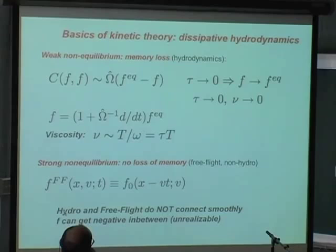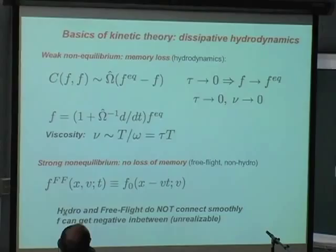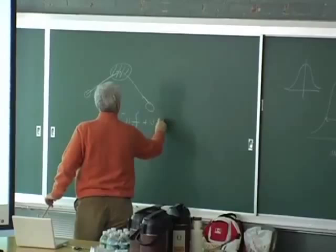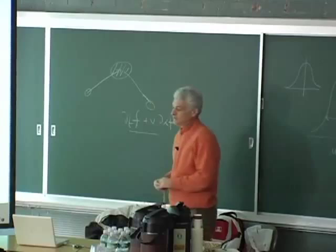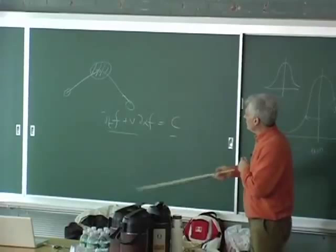Remember the structure I gave you: d_t f plus v d_x f equals collision. So this is what Boltzmann called the ever-shifting battle. There is a clear competition between streaming — which is bringing matter out of equilibrium — and collision, which tries to pull it back to equilibrium. It's a constant fight.